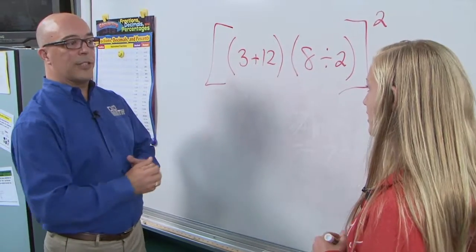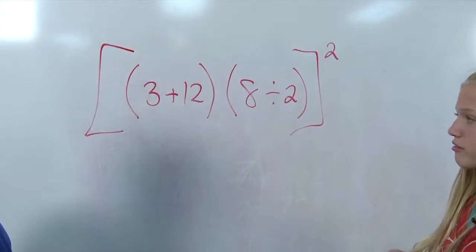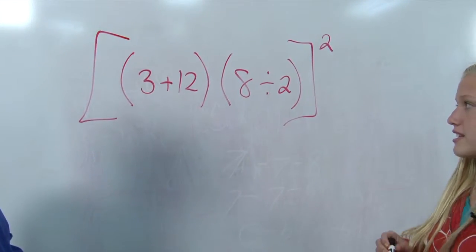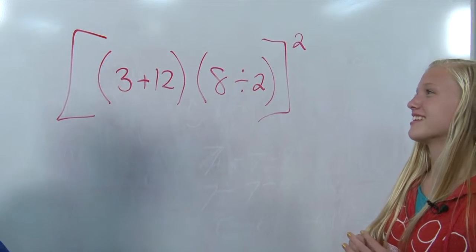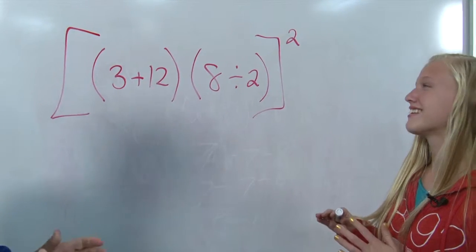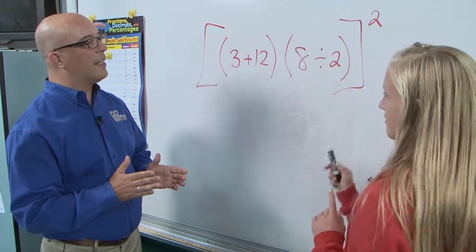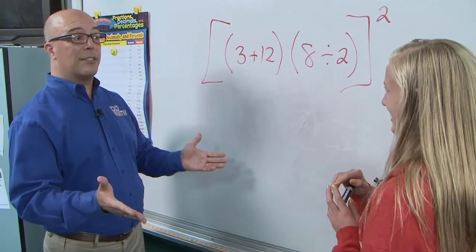Go ahead and read the problem for us as it is. Okay. 3 plus 12 in parentheses, times 8 divided by 2 in parentheses, in brackets, to the exponent of 2. Perfect.